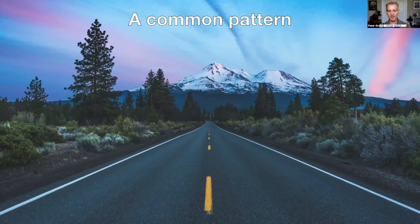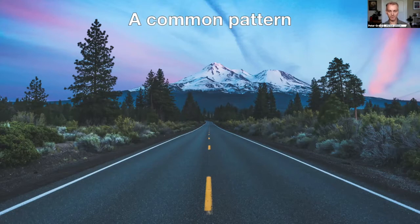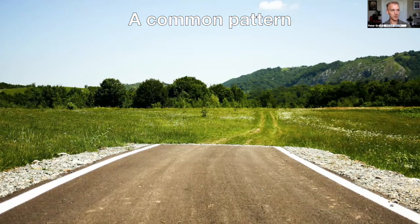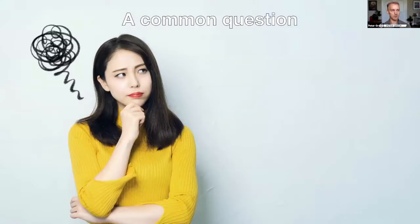Then a common pattern would happen on that road. A few months, or maybe even a year or two in, the teams would start working out all the internal constraints. If you're familiar with theory of constraints, we would address the constraints that were within the team, and then suddenly the improvement needs would shift to outside of the team. Our nice smooth highway to agile happiness would suddenly turn into a bumpy dirt road — where did the pavement go? As soon as the constraint shifted outside of the team, things kind of broke down.